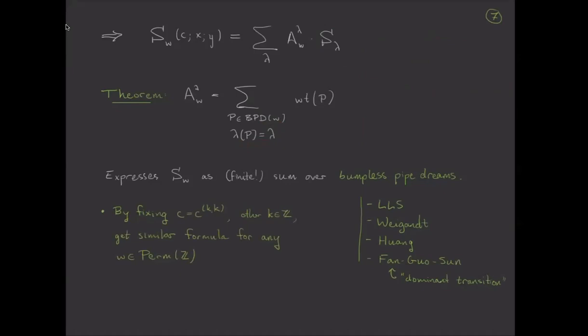And the other comment I wanted to make was that by, instead of fixing, we did fix C equals C zero zero, and I'll keep doing that for the rest of the talk. But you could fix any other KK, or in fact, maybe KL for any other integer K, and you get a similar formula to this.